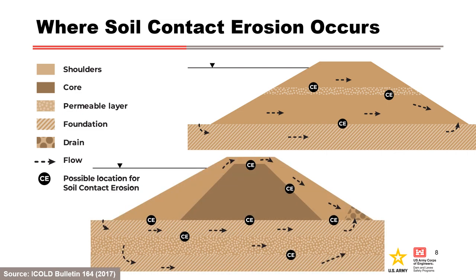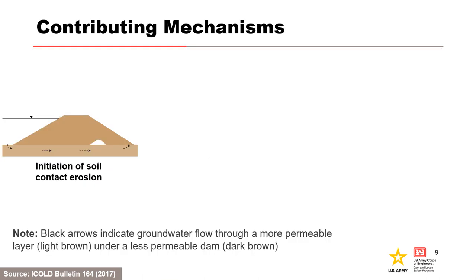A zoned embankment dam is shown with the potential for soil contact erosion at high reservoir levels above the core and for erosion into coarse layers in the foundation. Generally, soil contact erosion is considered a contributing mechanism. For example, it can lead to the formation of a roof or a pipe for concentrated leak erosion.